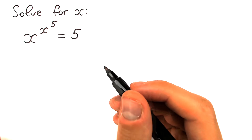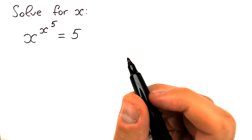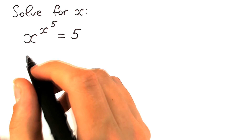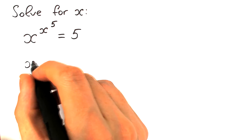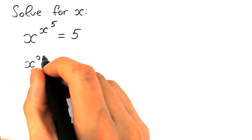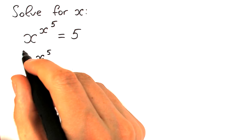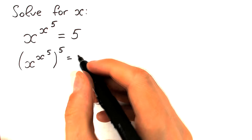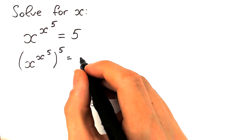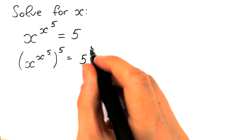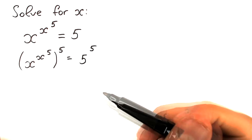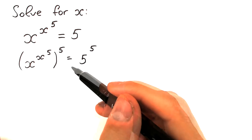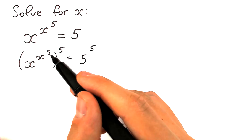Before solving this question I want you to look at this really great trick. First of all, we should raise both sides to the power 5. So we have x to the power x to the power 5 — let's raise the left-hand side to the power 5, and we do the same thing with the right-hand side. This is a really important moment because this is a really great trick right here.